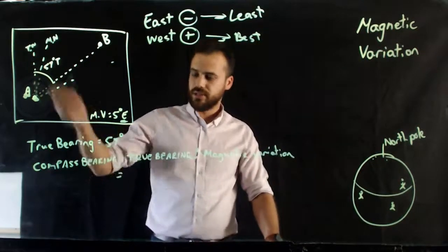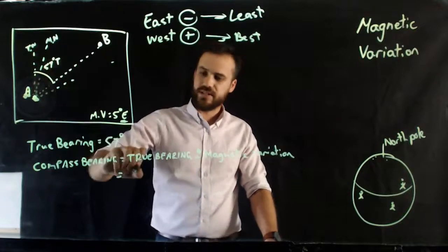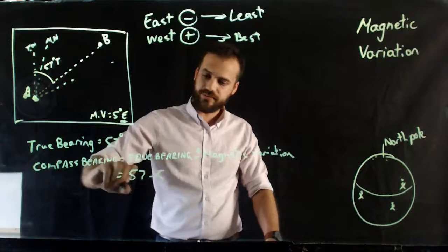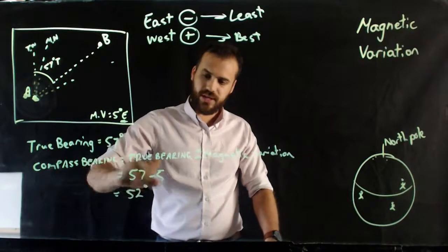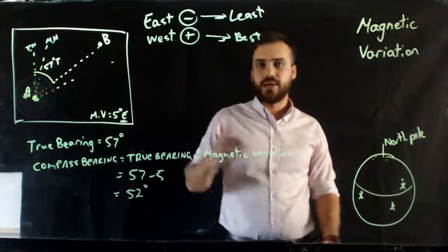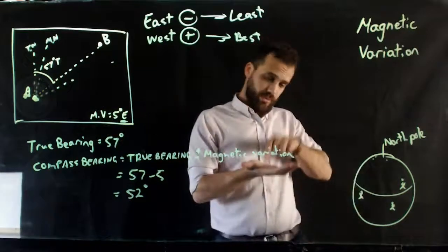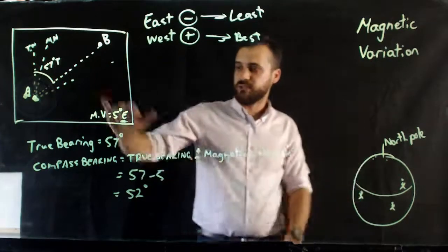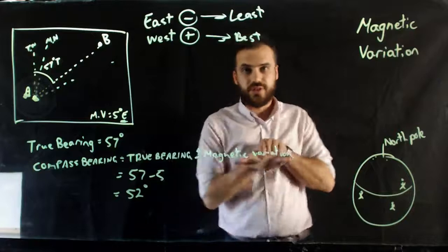So for our particular question here, the true bearing was 57 degrees, we need to subtract our magnetic variation of 5. That gives us an answer of 52. So that means that if we want to go from point A to point B, and on the map it looks like we need to follow a bearing on our compass of 57, we actually have to follow a bearing of 57 minus 5, 52.